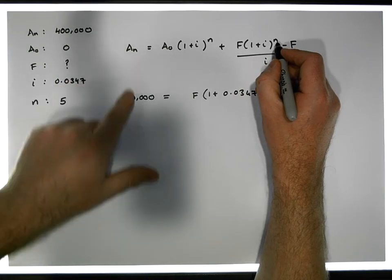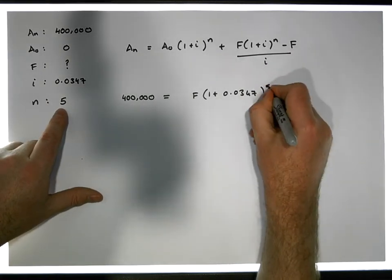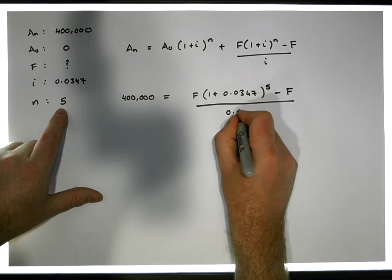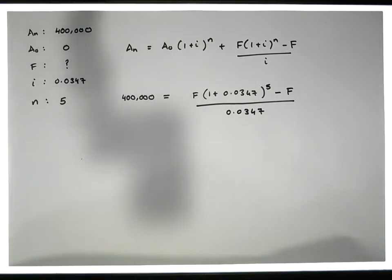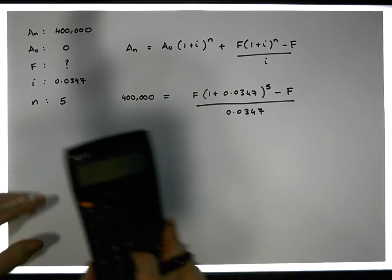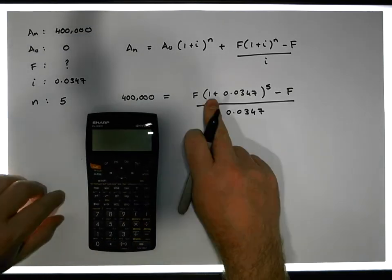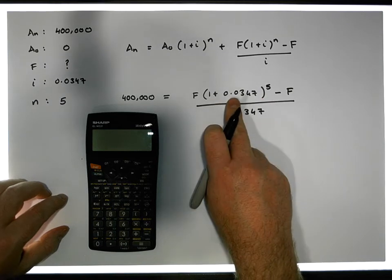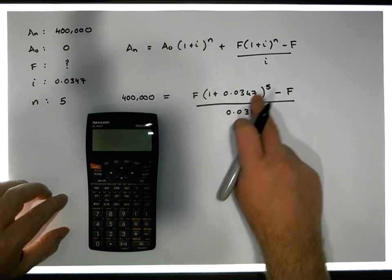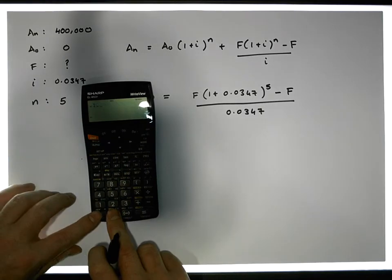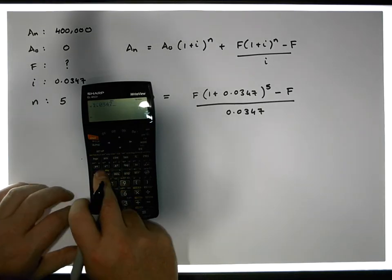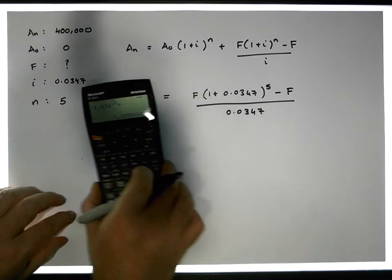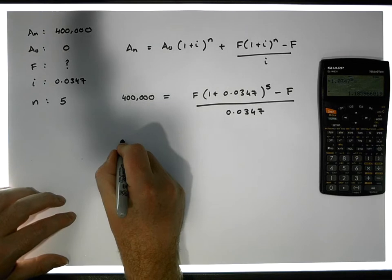The balance reaches four hundred thousand euros five years in the future, so n = 5. We compute (1 + 0.0347) raised to the power of five: 1.0347⁵ gives us a value of approximately 1.19. So we now have 400,000 = f × (1.19 − 1) / 0.0347.